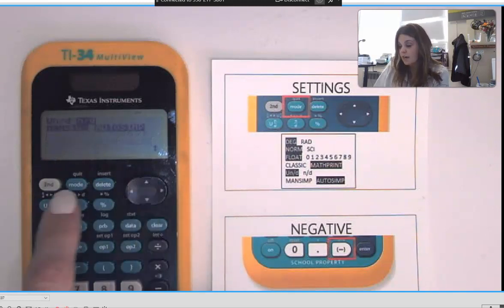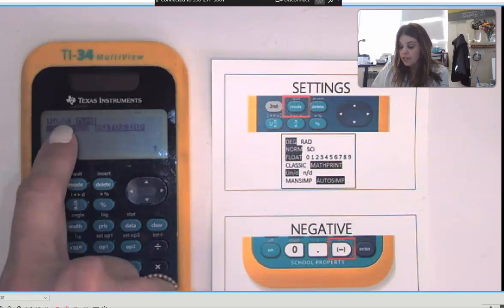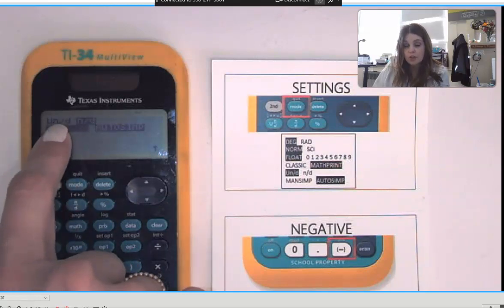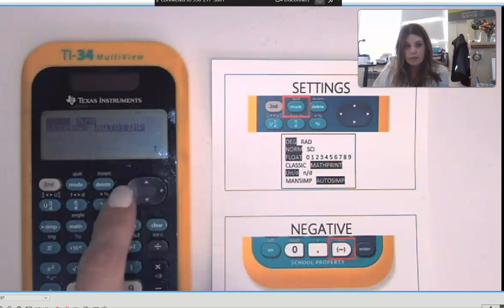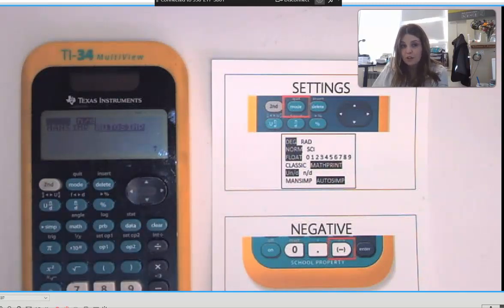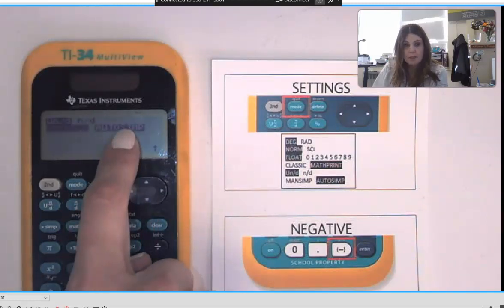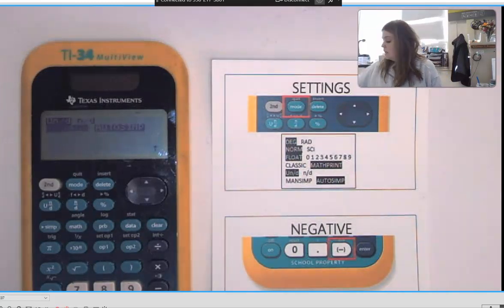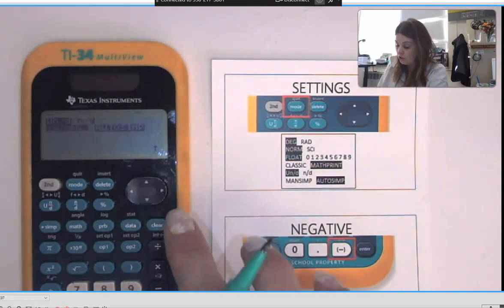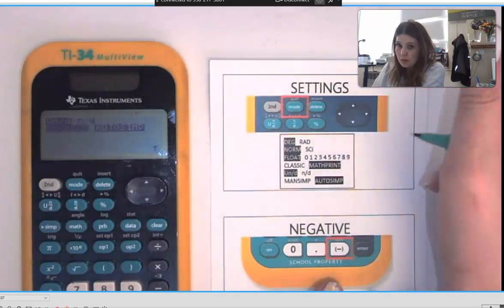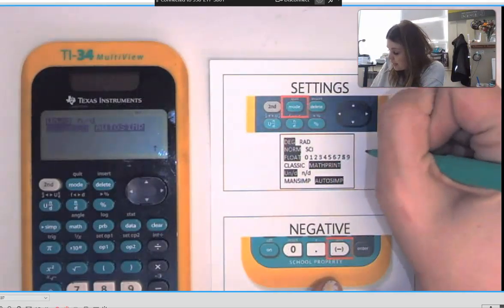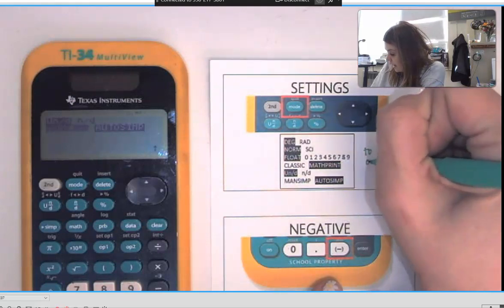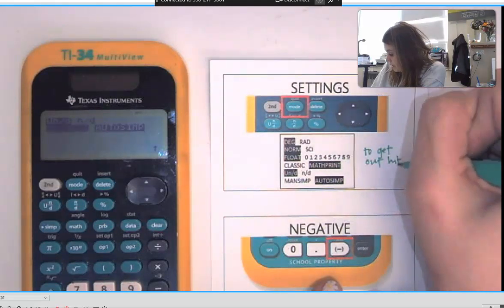You're going to make sure that everything that I have highlighted here you also have highlighted. So you should be on degree, norm, float, math, print. And then if you scroll down, see this calculator is not on the right setting, so this calculator needs to be on the U and not on this other one. So to get it there I just have to have my box flashing on what I need and hit enter. Then it needs to be on auto simp. Once you have that all selected correctly, and hopefully the person before you has already done this, you can clear out of it to get to your home screen. To get out hit clear.